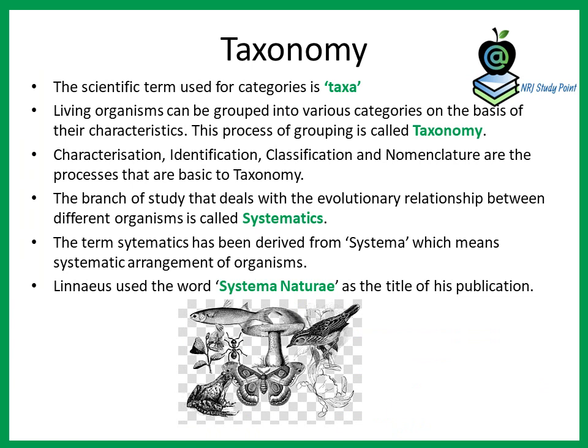The organisms are arranged into different categories on the basis of some easily observable characters. This process of arranging organisms into various categories is called taxonomy. The word taxonomy comes from the word 'taxa.' There are four processes basic to taxonomy: characterization, identification, classification, and nomenclature.